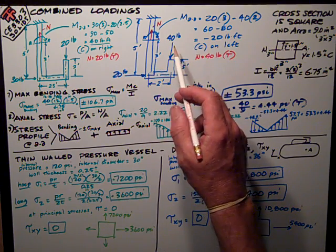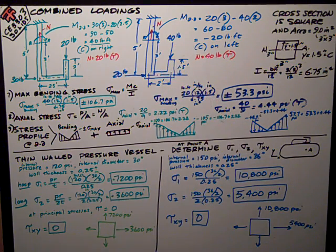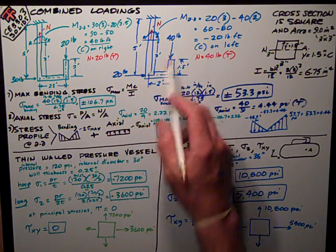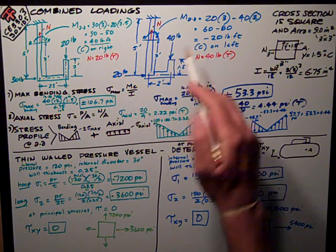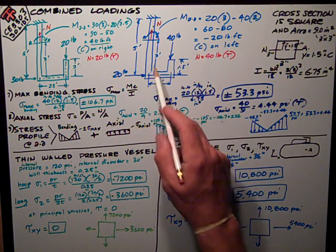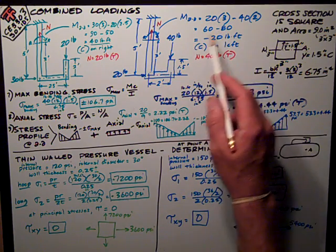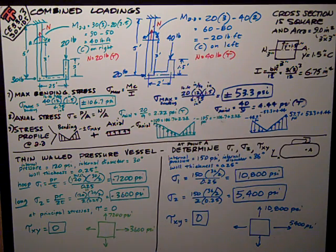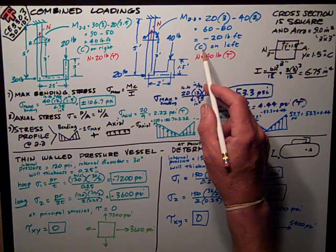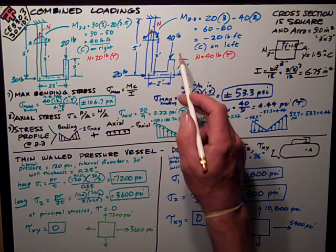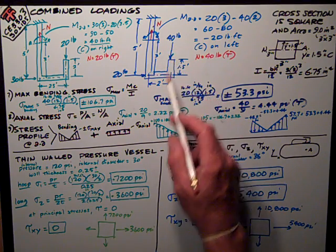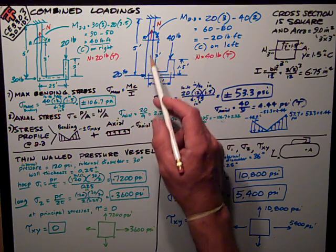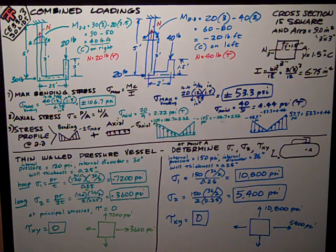Similarly, but opposite, on the blue test: I had a 20 pound force at one distance and a 40 pound force at another. The moment is 20 times 3 minus 40 times 2, which works out to be negative 20 by my sign assumption. Meaning I have compression on the left side of the section — the bigger moment comes from the 40 pounds, pushing on the left side of the section.